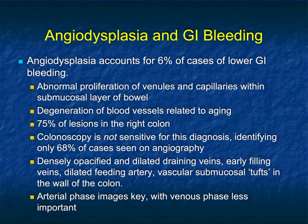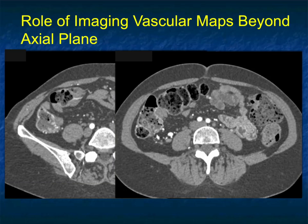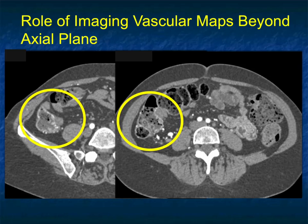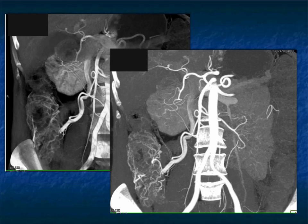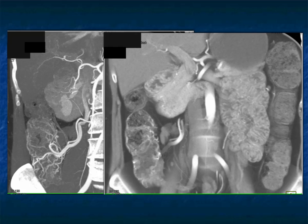Arterial phase images are key, with venous phase imaging typically being less important but still important. If you look carefully here at the patient's right colon, at first you notice some thickening, but then there are prominent vessels. Remember, we speak about going beyond the axial plane — when you look at it on volume rendering on the left and MIP on the right, you can see the very prominent vessels from the ileocolic branching. That is the look of angiodysplasia of the cecum and right colon.